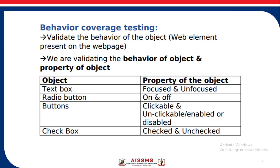In behavioral coverage testing, we check the property and the behavior of the object. For example, when we talk about a text box, we check the property of the object whether it is focused or unfocused. For the radio button, we check whether it is on or off. For buttons, we check whether it is clickable or unclickable, and for the checkbox, we check whether it is checked or unchecked.